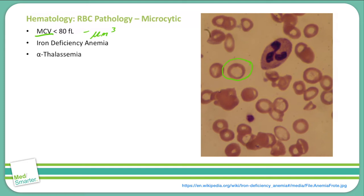We will also discuss alpha thalassemias, beta thalassemias, lead poisoning, and sideroblastic anemia, which are all microcytic anemias.